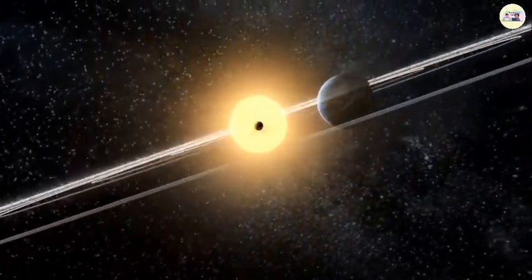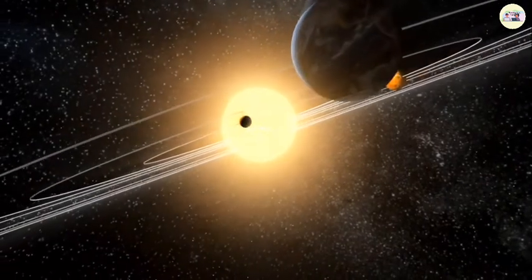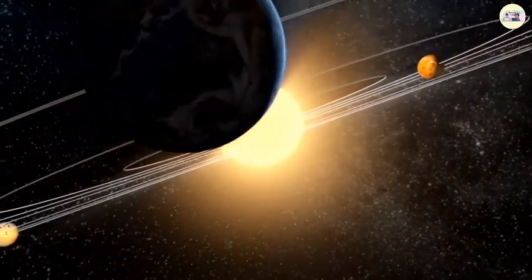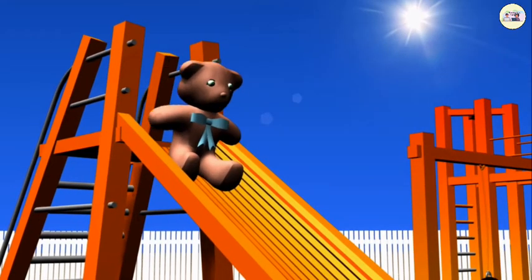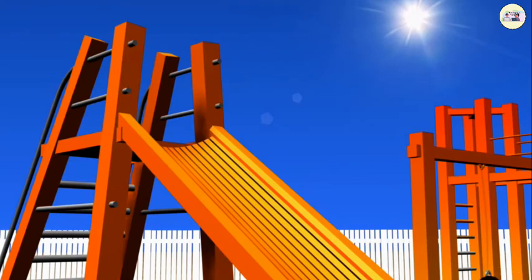Now, let us quickly understand gravitational potential energy. The energy stored in an object because of its position or state is called potential energy. This energy is relative and increases as we go to greater heights from the surface of the earth.